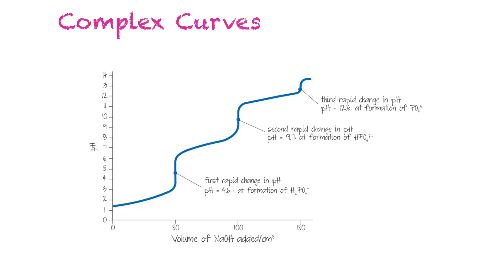This is the first one, the first rapid change in pH. The pH is at 4.6 at the formation of H2PO4⁻. Then there's this drop off, and then the second rapid change in pH at that equivalence point would be 9.7 when we formed HPO4²⁻. Then we continue on and there's a third rapid change in pH, that third equivalence point at 12.6 when we formed PO4³⁻. So we've dissociated the acid completely.